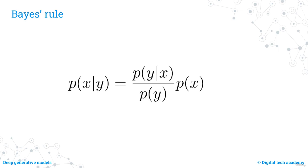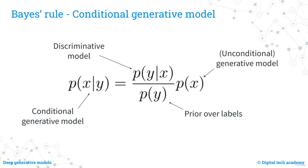Bayes' rule is a mathematical formula allowing us to calculate the probability of an event based on prior knowledge of related conditions. Named after 18th-century English theologian and mathematician Thomas Bayes, it is expressed as: P(X|Y) = P(Y|X) × P(X) / P(Y), where P(X|Y) is the probability of event X given event Y, P(Y|X) is the probability of Y given X, P(X) is the probability of X, and P(Y) is the probability of Y. Bayes' rule connects the probability of a conditional generative model to those of a discriminative model and an unconditional generative model, expressed as a ratio.